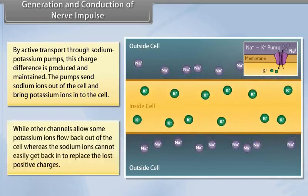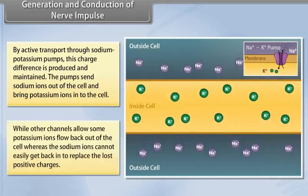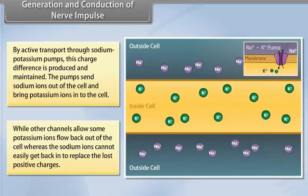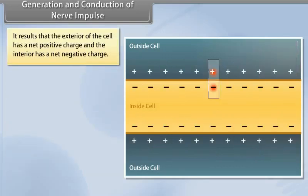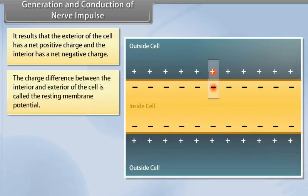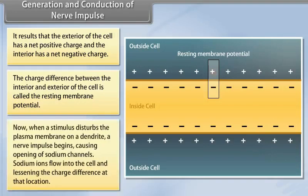The pumps send sodium ions out of the cell and bring potassium ions into the cell. While other channels allow some potassium ions to flow back out of the cell, the sodium ions cannot easily get back in to replace the lost positive charges. This results in the exterior of the cell having a net positive charge and the interior having a net negative charge. The charge difference between the interior and exterior of the cell is called the resting membrane potential.